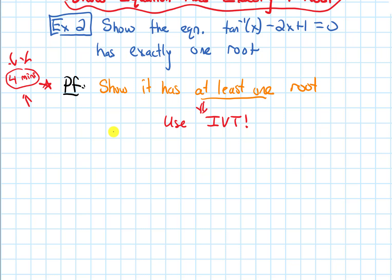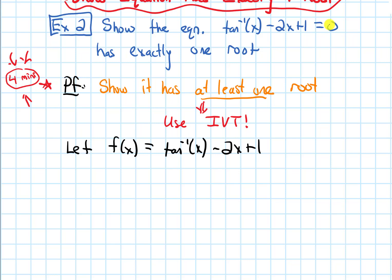Let's talk about it together now. I'm going to let f(x) be arctan(x) minus 2x plus 1, and I want to show that this function equals zero. To do that, I need to find two numbers to plug in: one that will make this whole function less than zero, and one that will make the function bigger than zero. The Intermediate Value Theorem will then tell me it has to be zero somewhere in between, as long as my function is continuous — and it turns out it will be.